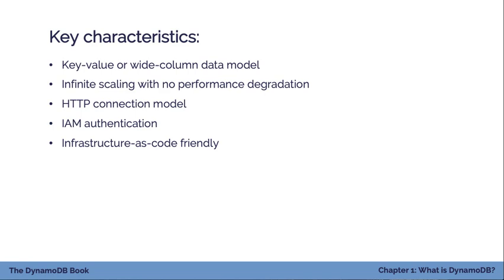DynamoDB is also infrastructure as code friendly. Infrastructure as code refers to a pattern where you define all of your application infrastructure — including your databases, queues, and compute — in some sort of code format that makes it clear what your infrastructure is and how to update or recreate it. It can be a little tricky with relational databases, where maybe you can provision the database but it's hard to create users inside it, create tables, or create indexes. In contrast, all DynamoDB resources can be created via infrastructure as code, whether that's the table itself, DynamoDB streams, secondary indexes, or the IAM users that have permissions on your table.